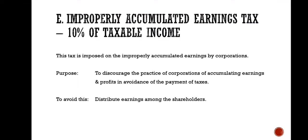Next is the improperly accumulated earnings tax, which is 10% of the taxable income. This tax is imposed on the improperly accumulated earnings by corporations. The purpose is to discourage the practice of corporations of accumulating earnings and profits in avoidance of the payment of taxes. To avoid this, you have to distribute earnings among the shareholders.